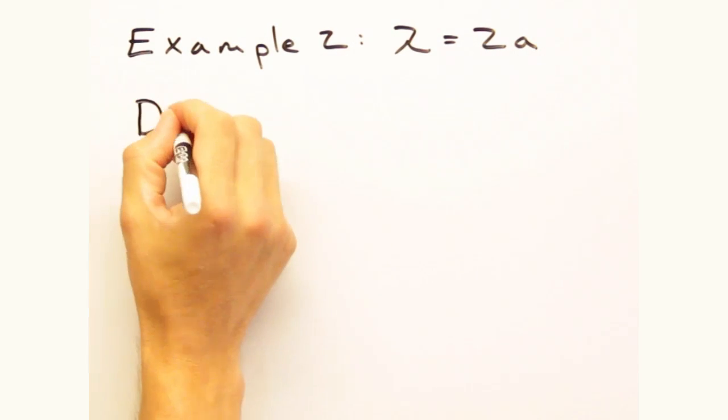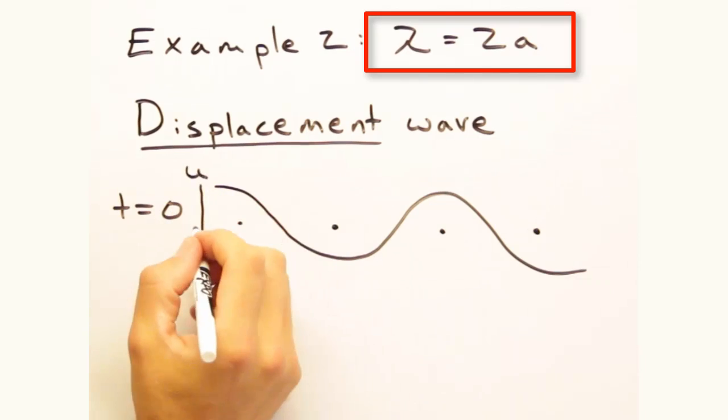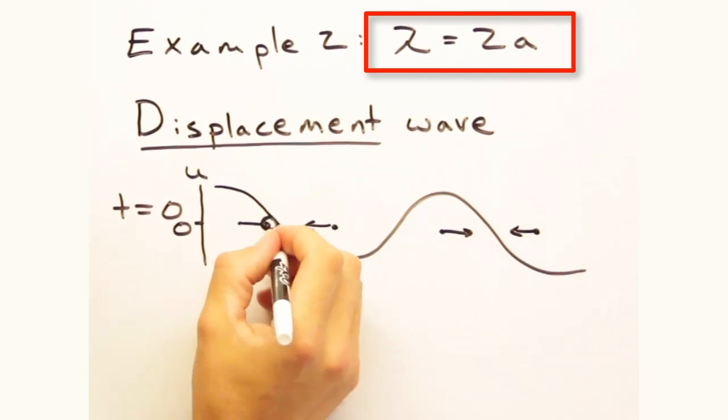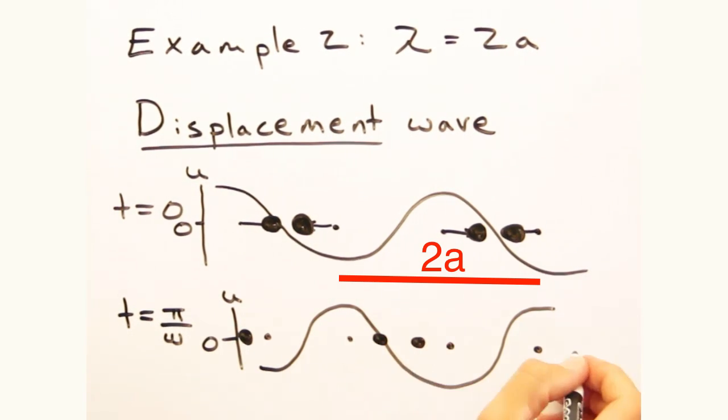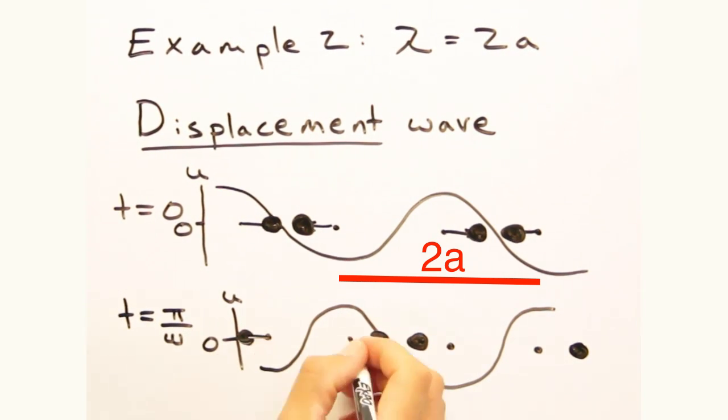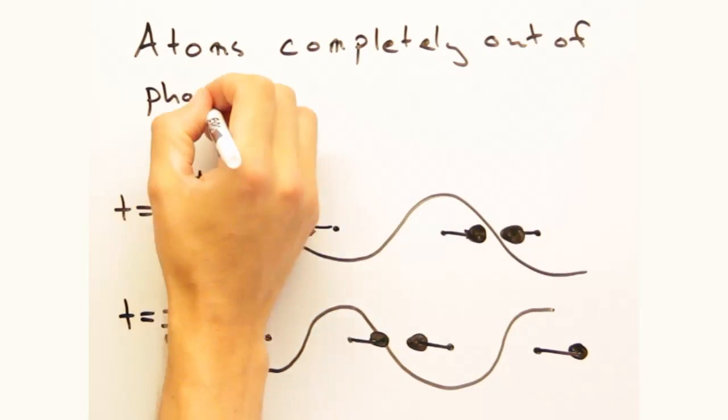which puts q here at π over a at the local maximum of the sine curve. Then if we draw our lattice and our displacement wave at some point t equals 0, these atoms experience positive displacements, and these atoms experience negative displacement. Then let's look at it at some time t later, and the peaks and troughs have switched. So the atoms are moving opposite their neighboring atoms, as if completely out of phase, right? Yeah.